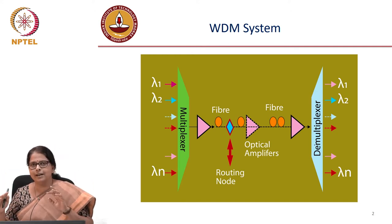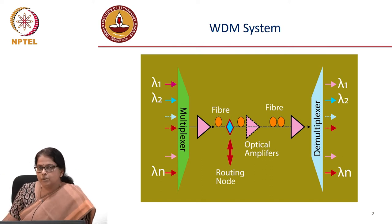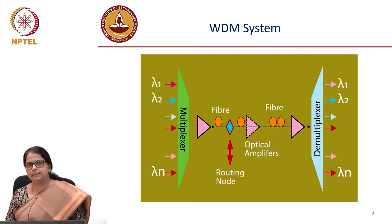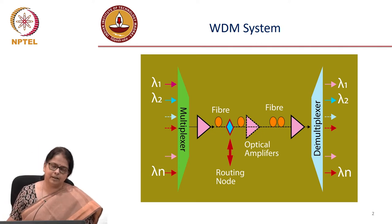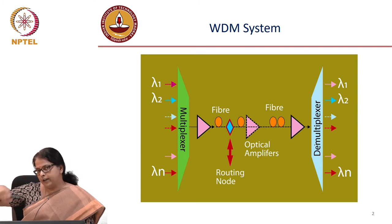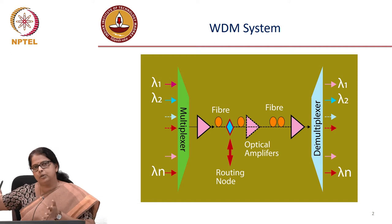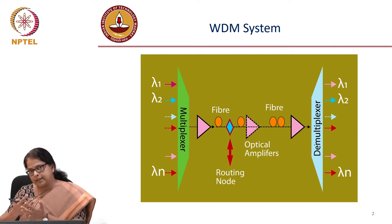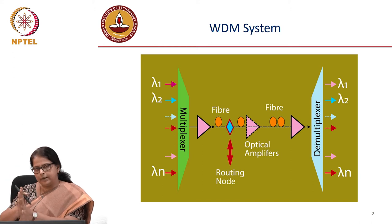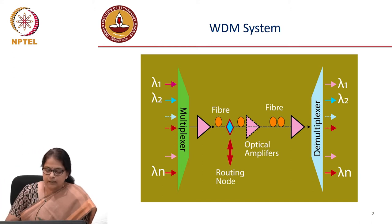We also talked about how we can do gain flattening of an EDFA. So now that you have an amplifier, how do you set up a long-haul communication link? Let's say you are trying to lay a submarine network — data from multiple users gets multiplexed and you want to transport it from one end of the submarine landing station to some other continent.